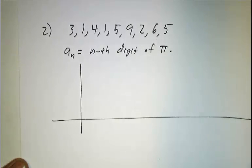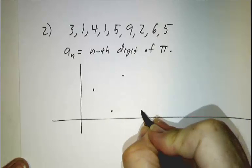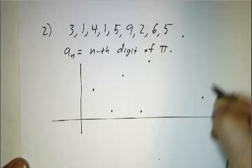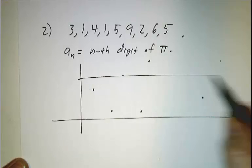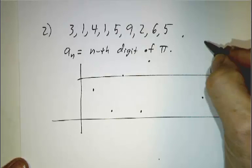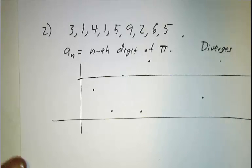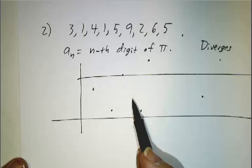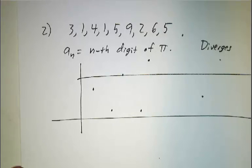If you make a plot of it, you get 3, then 1, then 4, then 1, then 5, then 9, then 2 — there's no pattern. There's no one line that it gets closer and closer to. This diverges. Notice that diverges doesn't mean it necessarily gets big — it means it doesn't settle down. In this case it bounces around like crazy.